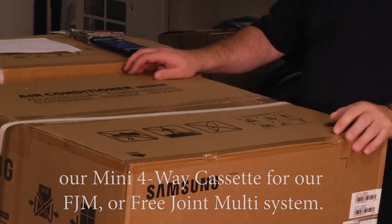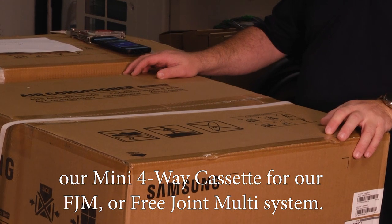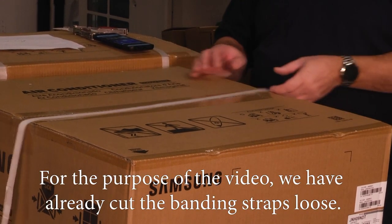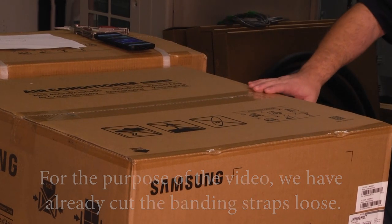Today we're going to show you how to install our mini four-way cassette for our FJM or free joint multi system. For the purpose of the video, we've already cut the banding straps loose.